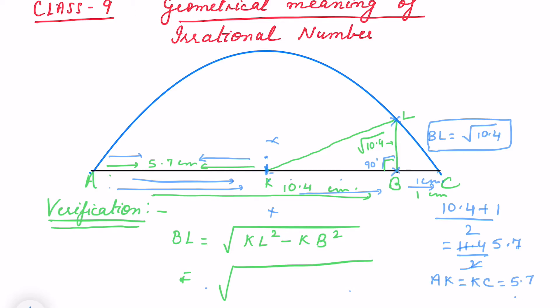If KC is 5.7 and BC is 1, so KB will be what? KC minus BC. KC is 5.7. If you subtract 1, that means this distance will be 4.7.